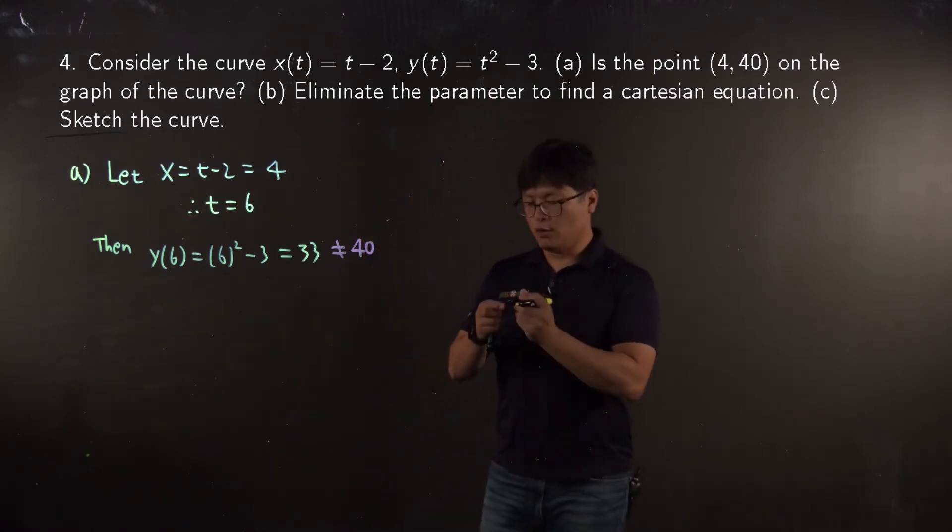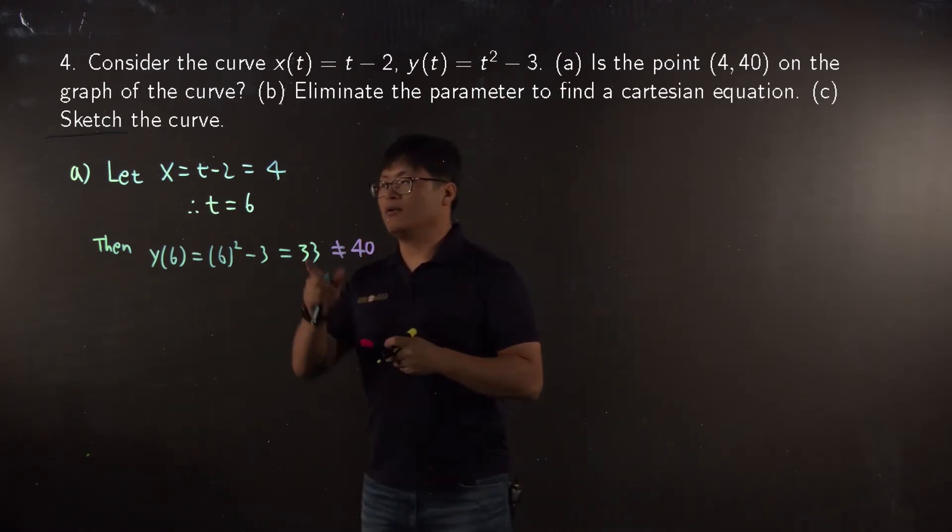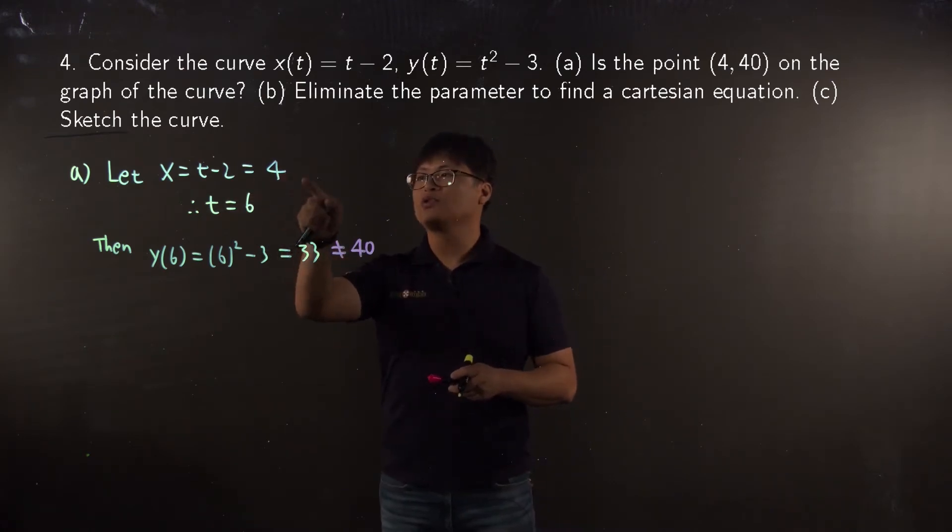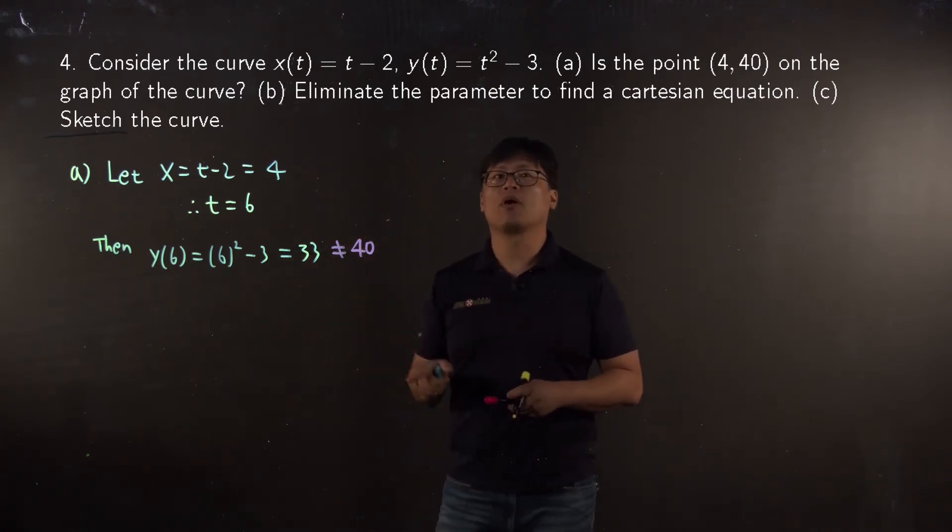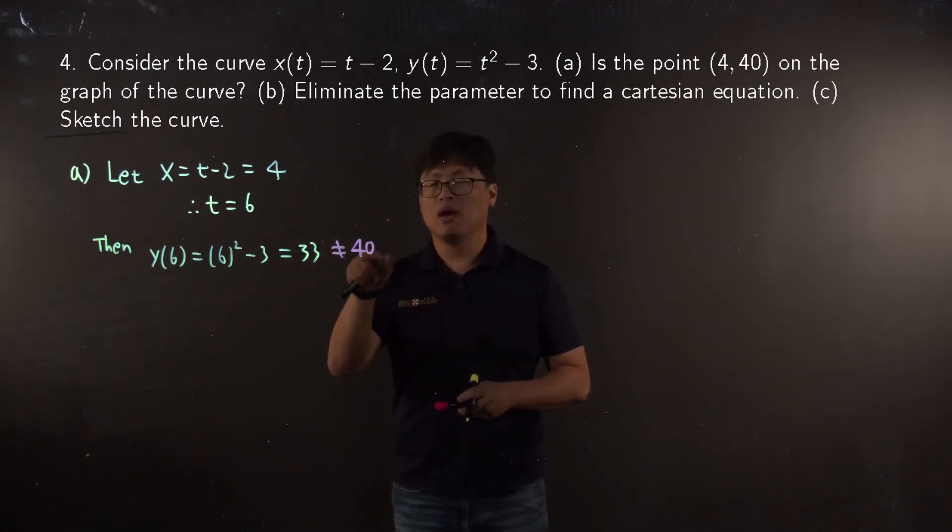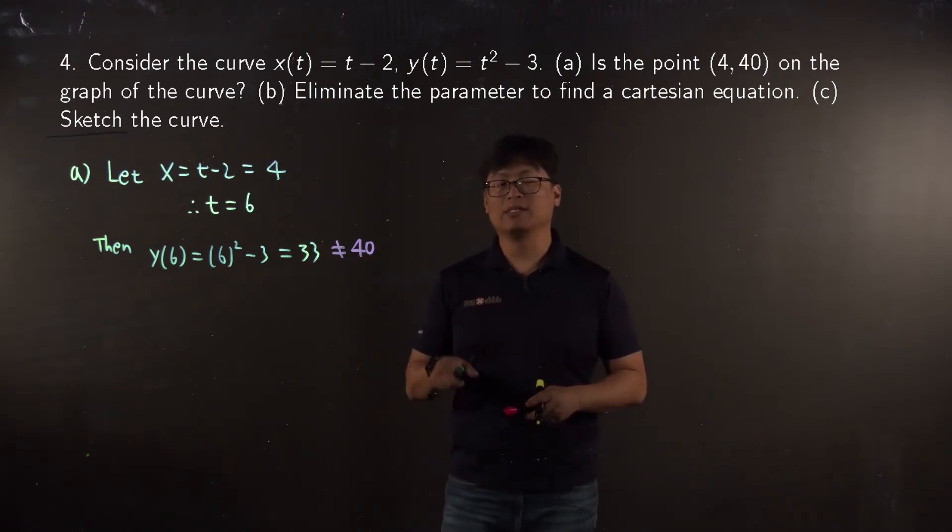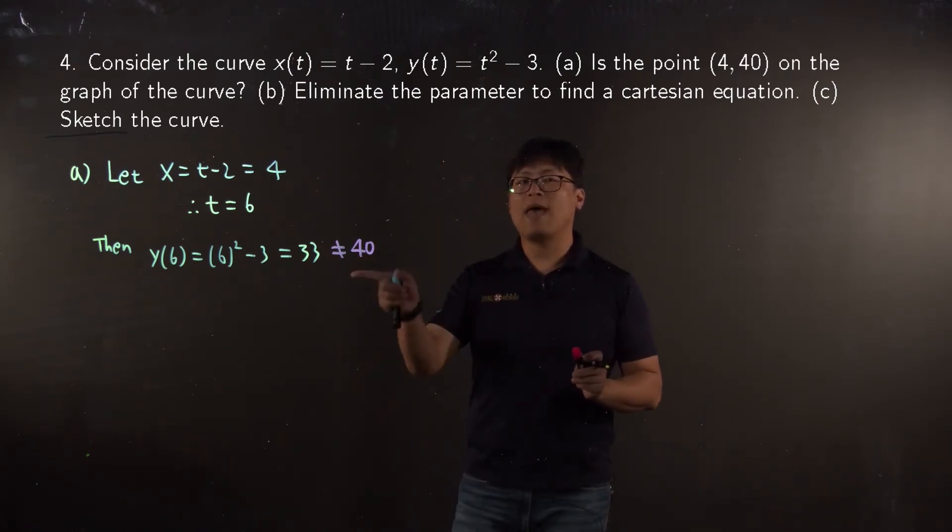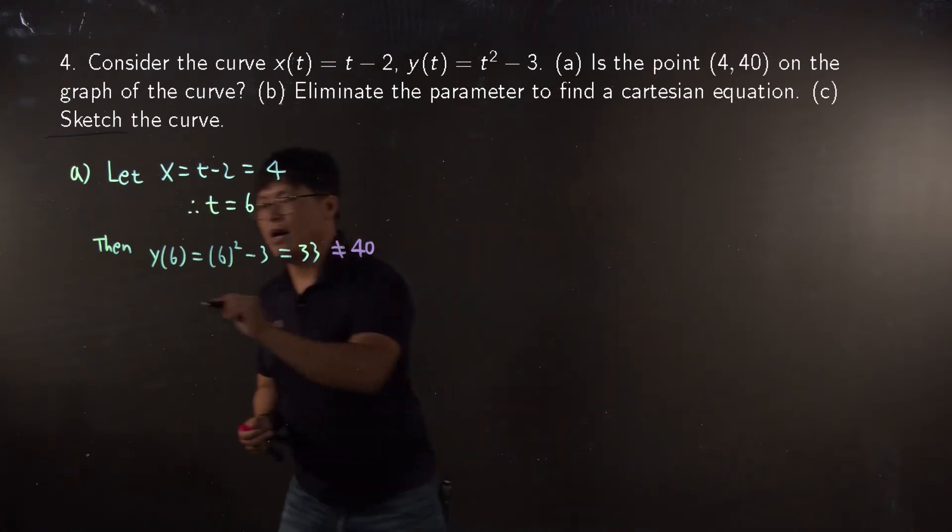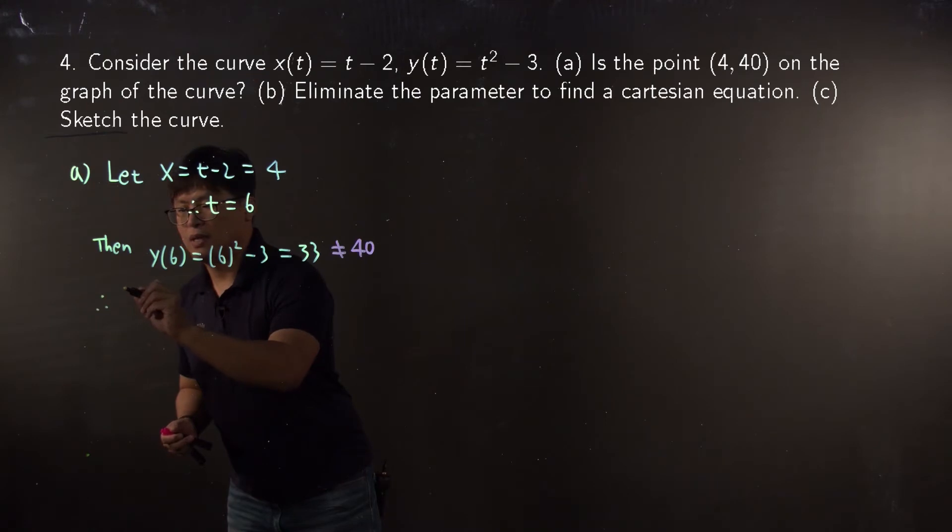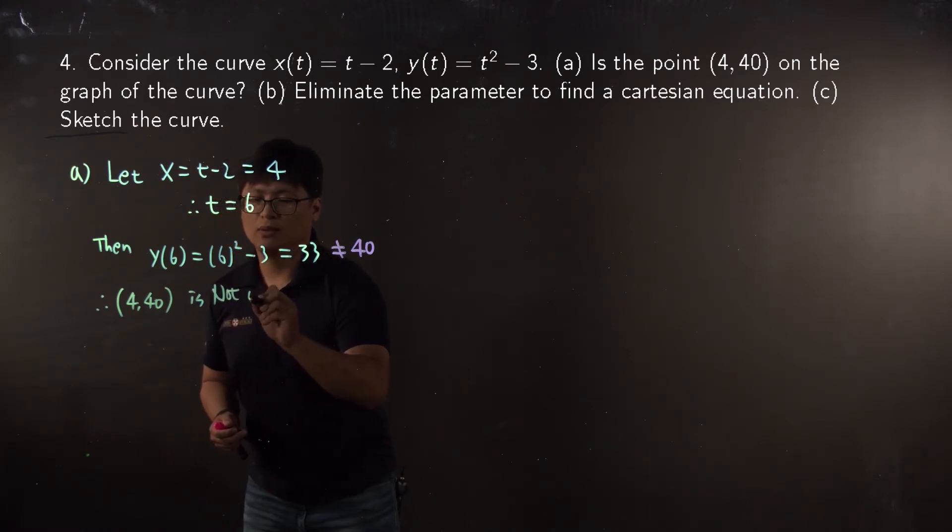So what you want to figure out is t = 6 is working for your x component to be equal to 4. That is only one parameter, but unfortunately that is not working for y = 40, which means there's no way to pass through this point with your parametric system equation. So my answer is (4, 40) is not on the curve.